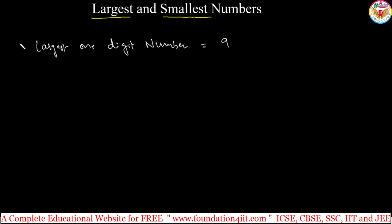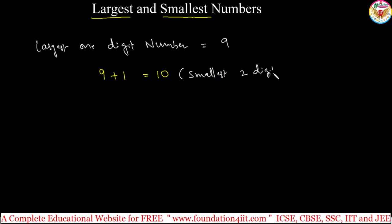Now, if you add 1 to this — 9 plus 1 — that is 10. So 10 is the smallest two-digit number. The smallest two-digit number is 10, because two-digit numbers start with 10, 11, 12, and so on.